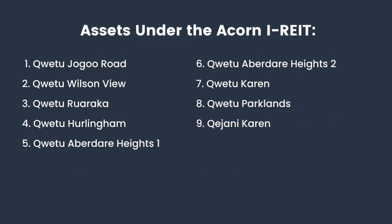Let's look at the assets under the Econ Income REIT. By the time I'm recording this video there are eight Kwetu assets and one Kejani asset. The list includes: Kwetu Jogoo Road, Kwetu Wilson View, Kwetu Ruaraka, Kwetu Hurlingham, Kwetu Abadea Heights One, Kwetu Abadea Heights Two, Kwetu Current, Kwetu Parklands, and Kejani Current. Which of these have you heard of?